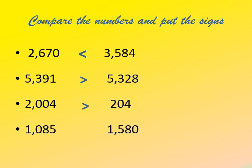In the fourth example, comparing 1085 and 1580: the thousands place digit is the same — both have 1. Moving to the hundreds place, the left number has 0 and the right has 5. Since 5 is greater than 0, we conclude that 1580 is greater than 1085. When we click, the sign confirms that 1580 is the greater number.